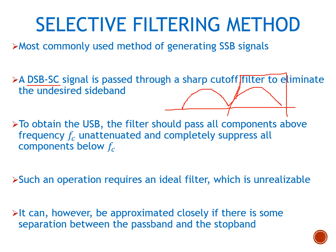In this way we can obtain the single sideband signal. The carrier frequency is in the middle, and the filter passes all components above the carrier frequency FC unattenuated while rejecting or suppressing components below FC. That applies when we want an upper sideband signal. If we want the lower sideband, the filter should be located on the other side.